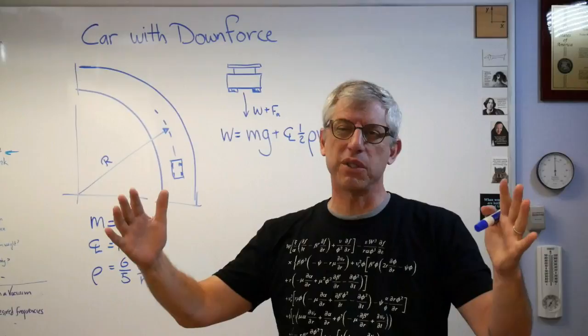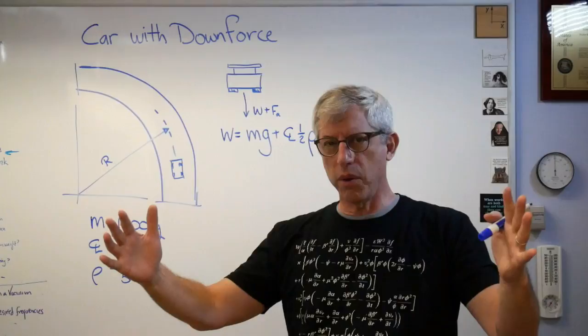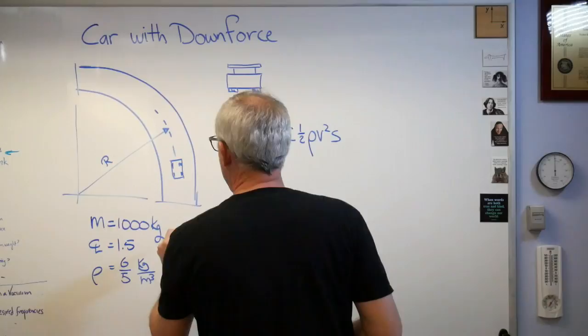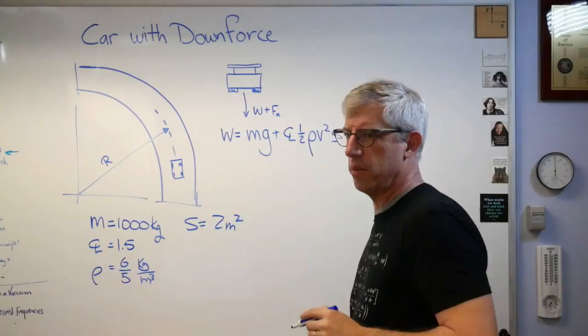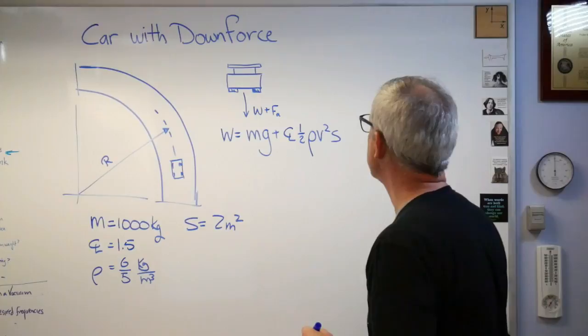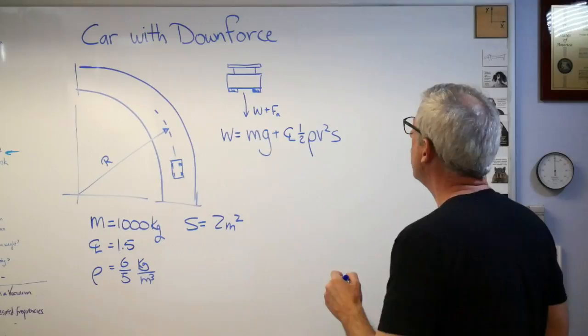And S, let's assume that the area of the wing, I think I decided, I'm going to check my computer here, is two square meters. So about that wide and about that by that. That's about right if you want to play with these numbers later and modify them you can. So what are we trying to find here? Well, we're trying to find the speed through the turn.